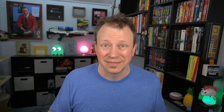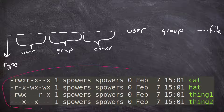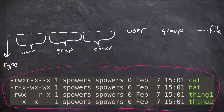First of all, what does a permission string look like, and how do we decipher what it means? I have a screenshot here — this is actually just a clip of a Linux box where I typed 'ls -l' on the command line to see a couple of files.